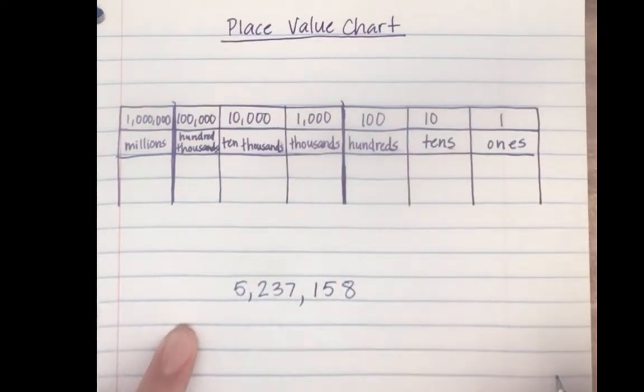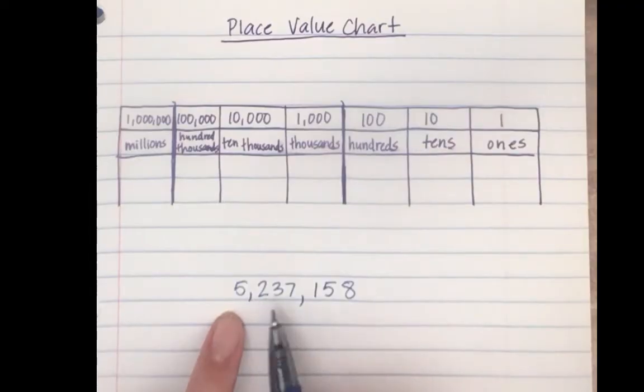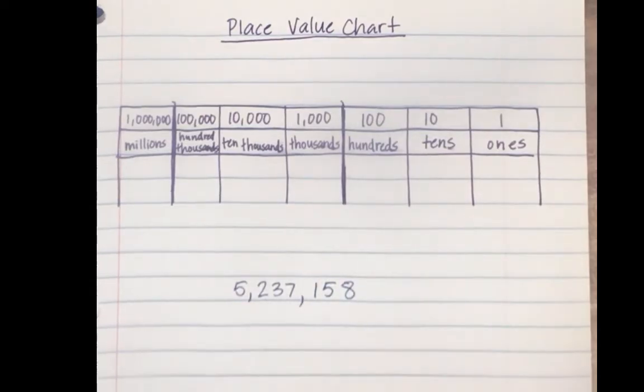Okay, we would read this number as five million, two hundred thirty-seven thousand, one hundred fifty-eight. If I was plugging this number into my place value chart,